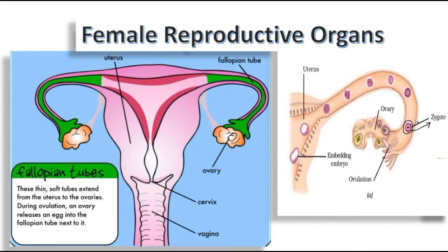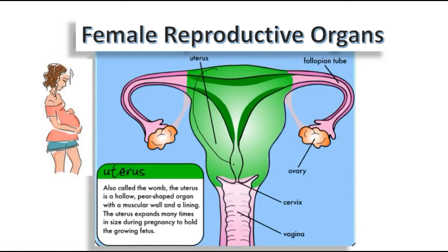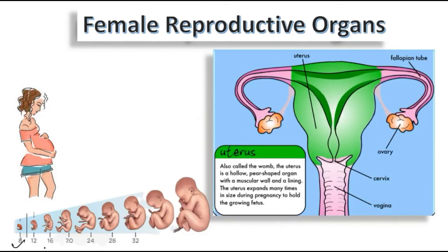Once the zygote — the fertilized cell — is formed, it will slowly move inside and stay in the uterus. The uterus is where the baby grows, or we can call it the mother's womb. It takes one to three days for the zygote to travel from the fallopian tube to the uterus, and there the growth begins. The embryo develops all its organs. You can see here the 8th week, 12th week, 32nd week — and slowly the child is completely formed.